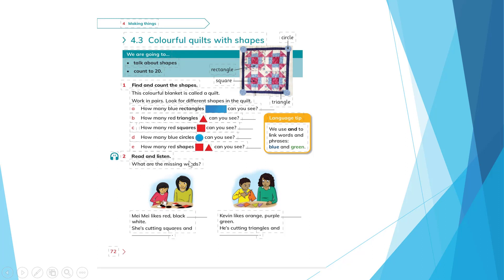Now I want you to read, listen, and write the missing words. Track 44: Maymay likes red, black, and white. She's cutting squares and circles. What's the word here? Red, black, and white — very good. She's cutting squares — look at the picture — circles. You write here: circles.